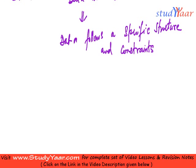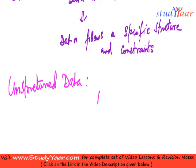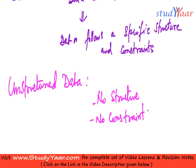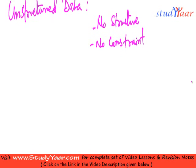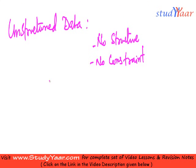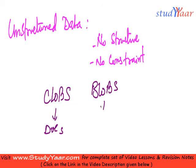And then we have unstructured data. Unstructured data, as the name indicates, doesn't have any structure or constraints. Examples of unstructured data are globs and blobs that we studied in the object-relational model. Globs are used to store documents and blobs are used to store images. In globs we have a large amount of character data which does not have a specific structure.